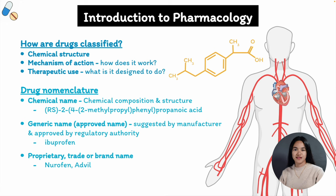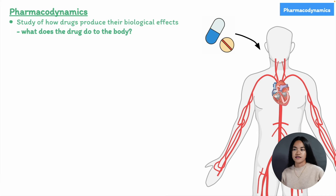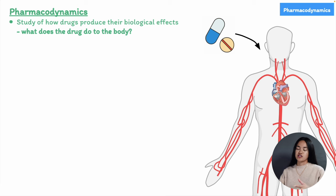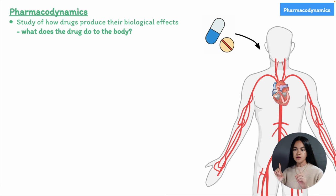Now let's look at how drugs produce their effects within the body. We're going to introduce pharmacodynamics, which is the study of how drugs produce their biological effects and how drugs affect the different systems of the body. It involves understanding the interactions between drugs and their target receptors, enzymes, and other molecules in the body, and how these interactions lead to changes in cellular function, organ function, and ultimately the overall response of the organism.